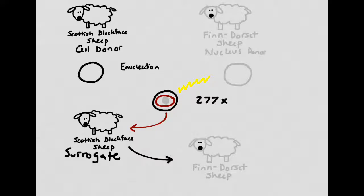Of the 277 attempts, only one sheep survived. Scientists had finally succeeded in creating a clone. Unfortunately, Dolly died at the age of six. Clearly more research needs to be done into improving the longevity of cloned species.